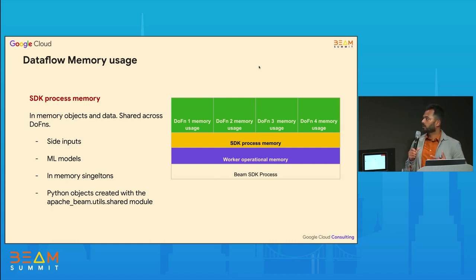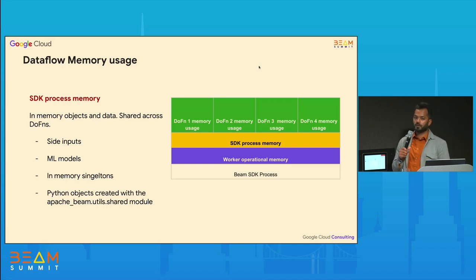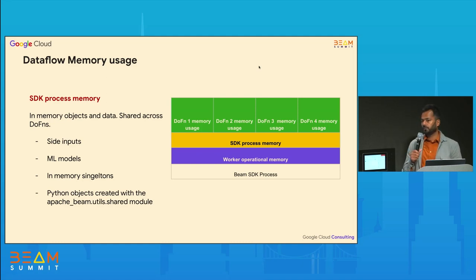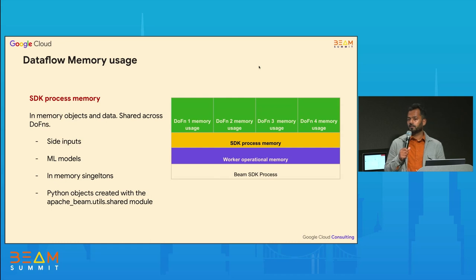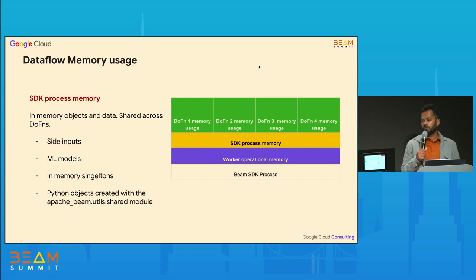What consumes SDK process memory? Things like side inputs — additional inputs you can provide within your DoFn — and loading an ML model, which also consumes SDK process memory. For example, if you are loading an ML model for a Python job, and Python jobs have one SDK process for each vCPU, and there are four vCPUs on a worker, you would have four copies of that ML model.